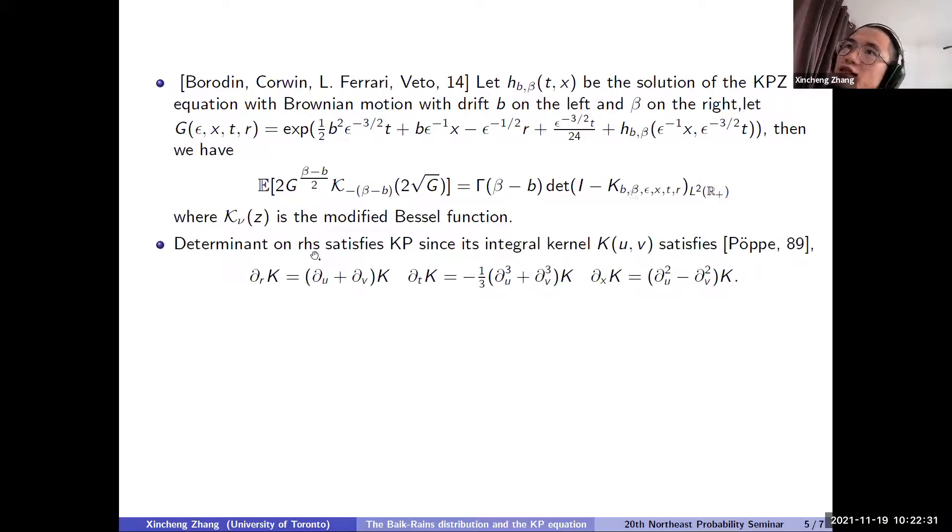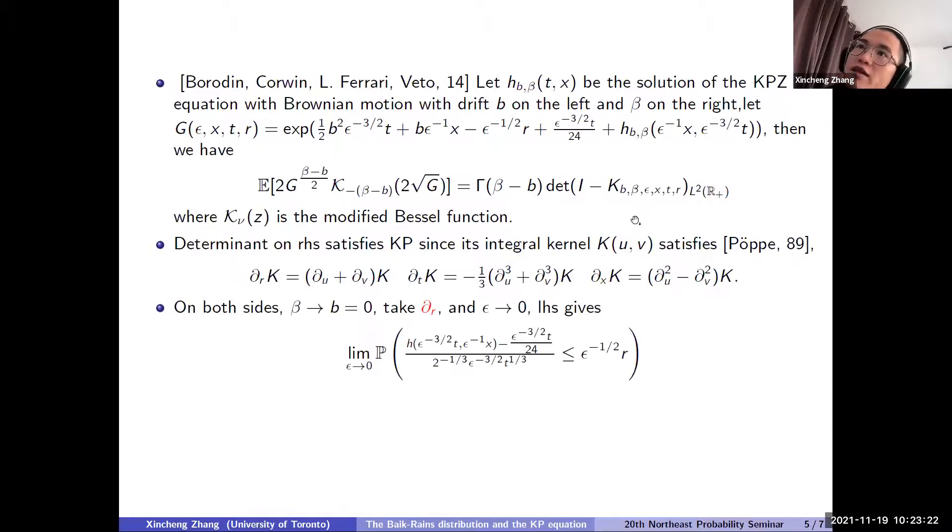Okay, so this kernel is an integral kernel. So we can find that the determinant on the right-hand side satisfies the KP equation. Because its integral kernel K(U,V) satisfies the following relation. So U,V are the variables denoting the integral kernel. And R,T,X are the variables, the essential variables. So this is some known result in the PDE literature that if the kernel satisfies this relation, then the determinant will satisfy the KP. And there's some freedom here because by conjugating the kernel with some operator, it will not change the determinant. So in this way, we can modify the kernel a little bit to make it in the form we want. So this is the starting point where we observe the Fredholm determinant structure.